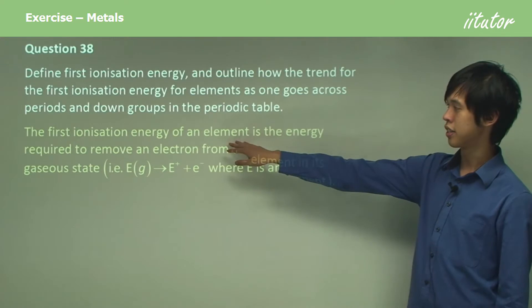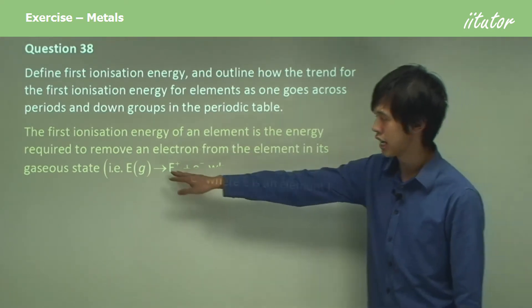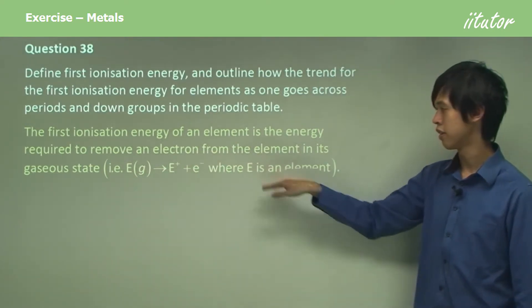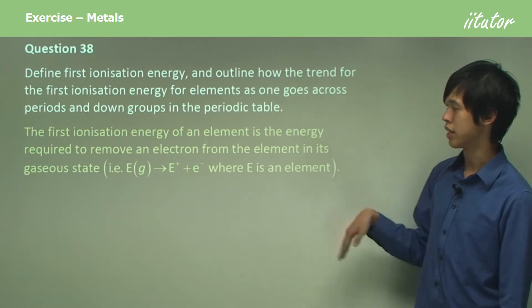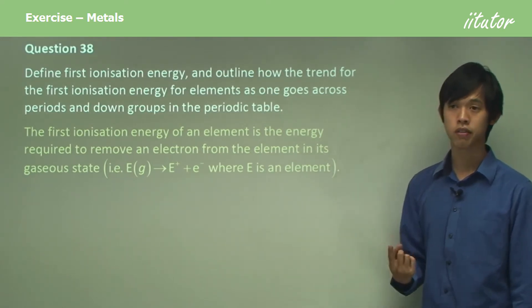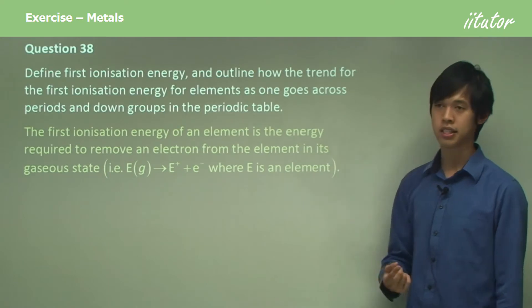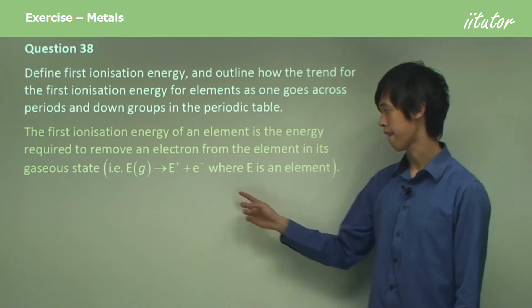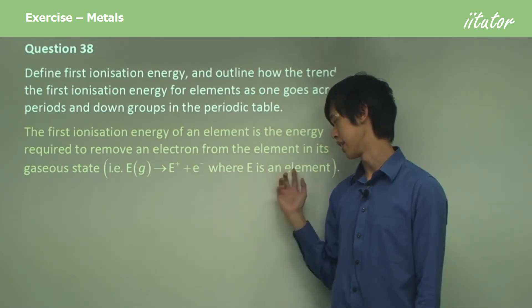The first ionization energy of an element is the energy required to remove an electron from the element in its gaseous state, i.e., E(g) → E+(g) + e-, where E is an element.